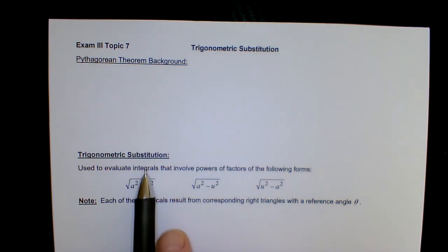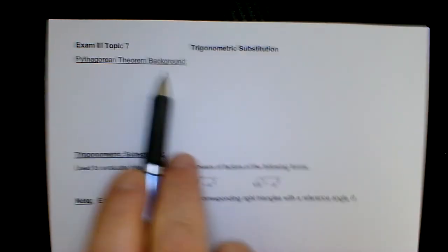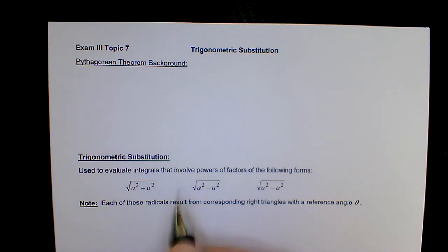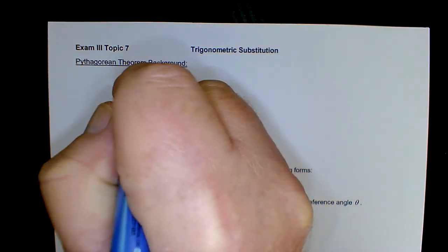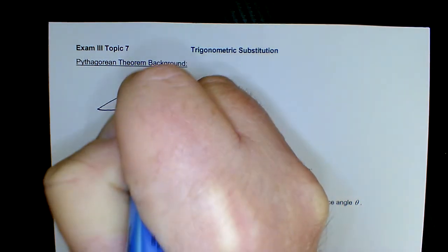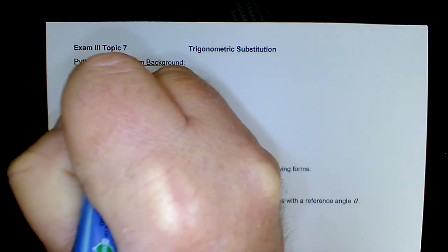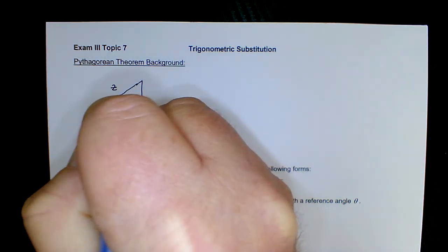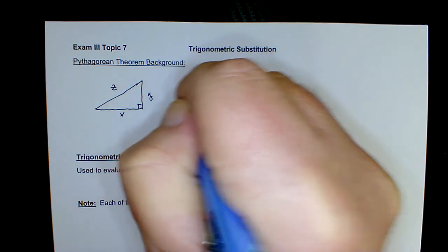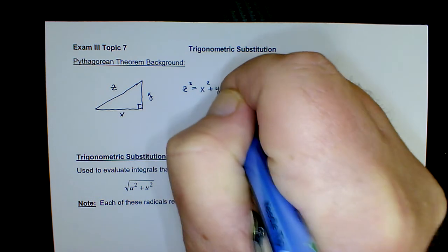First off, in order to understand the method I am proposing for trigonometric substitution, we need to make sure we understand the Pythagorean theorem completely. When we have a right triangle, the hypotenuse is labeled z, the horizontal leg x, and the vertical leg y. We know that z squared equals x squared plus y squared.